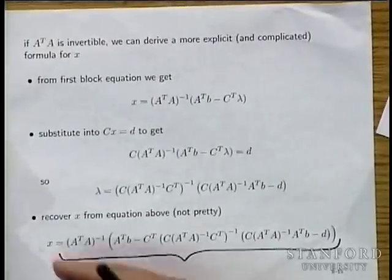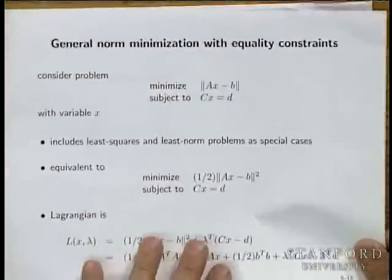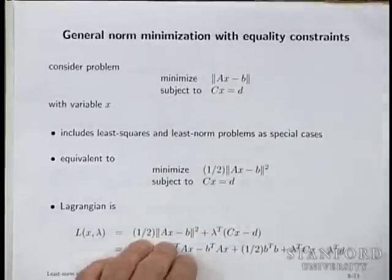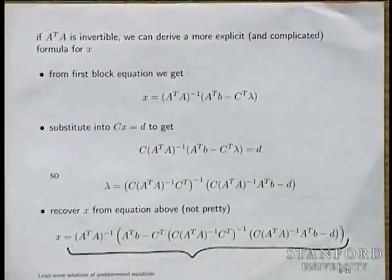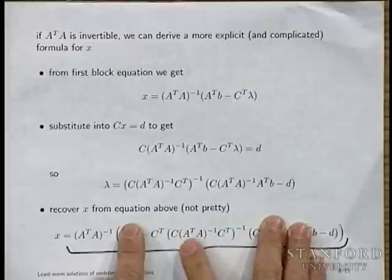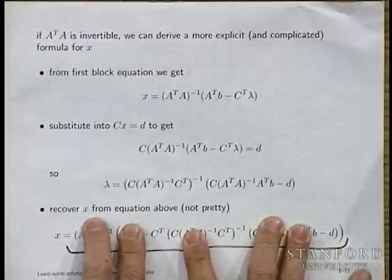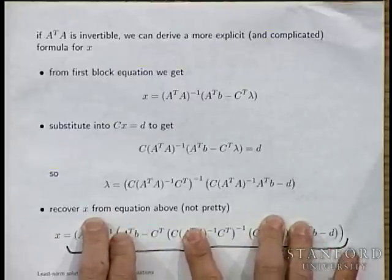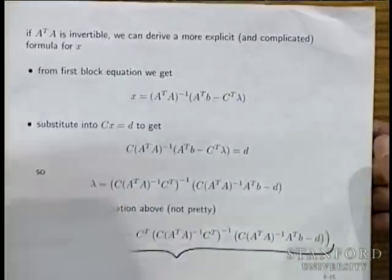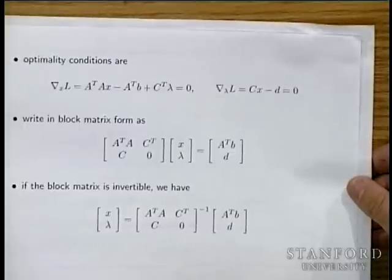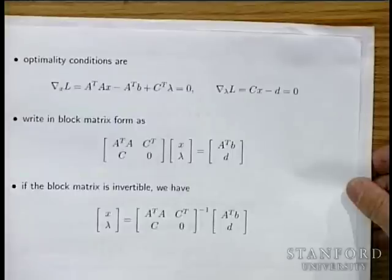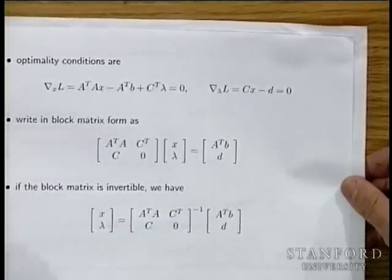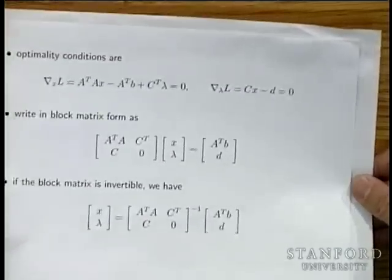You can check that this recovers all our formulas. For least norm (A equals I, b equals zero), plug in and things simplify to the least norm solution. For least squares, eliminate the constraint (C is null) and the block system reduces to (A transpose A) inverse A transpose B. This is a useful general framework, though unfortunately no homework problems were assigned that require it directly.